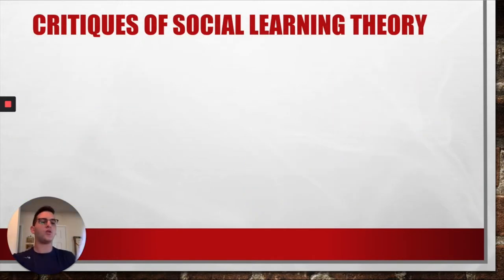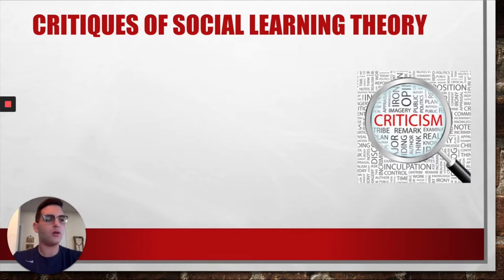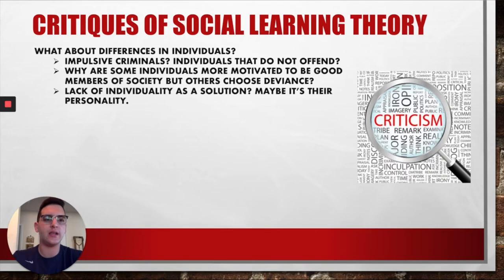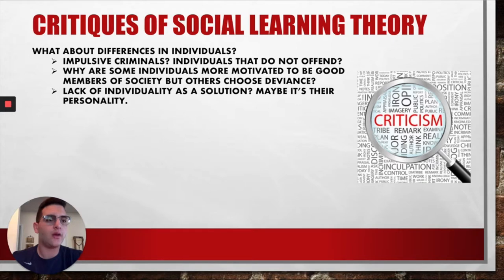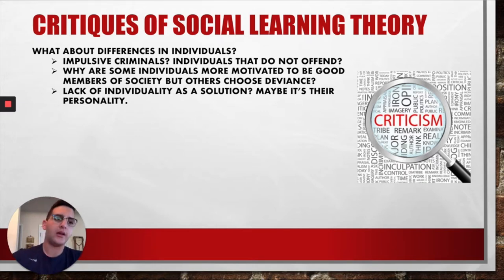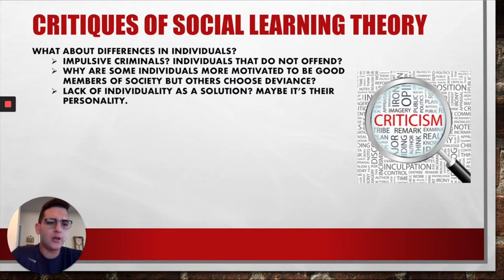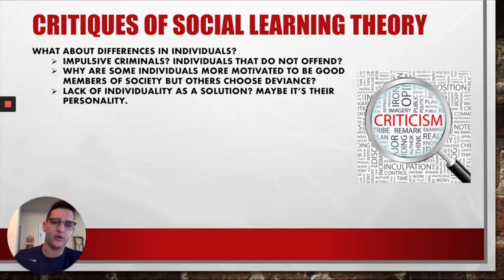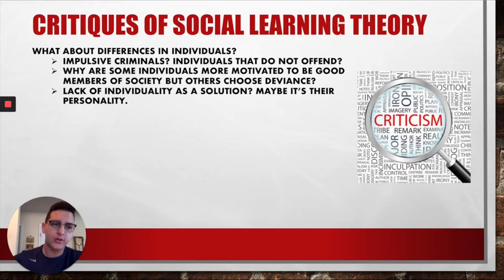The critiques of social learning theory, as Walsh and Jorgensen reference, are that SLT neglects individual differences in the ease or difficulty with which people learn. SLT does not offer much insight into why individuals commit crimes outside of intimate social groups, and why some do not — because certainly those individuals exist. Examples include impulsive persons who commit crimes and individuals who value long-term rewards for good behavior. Some criminologists argue this is due to certain individuals lacking individuality, and instead their personalities are represented in deviant groups where their personality traits are reinforced.